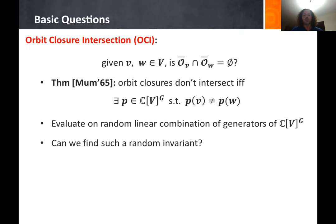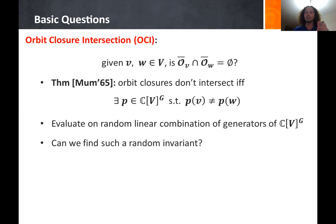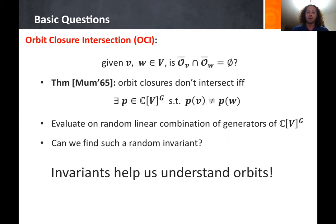Different group actions capture many important problems, and even their special cases are very interesting. Mumford in 1965 proved that orbit closures do not intersect if and only if there exists an invariant polynomial P that evaluates to different values on V and W. These invariant polynomials can witness orbit closure separation, giving a randomized algorithm: take a random linear combination of the generators of the invariant ring, which with high probability witnesses that the two orbits do not intersect.